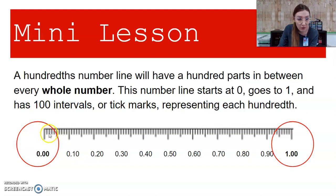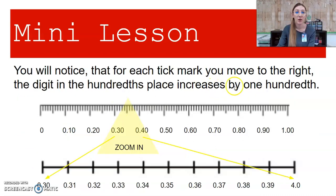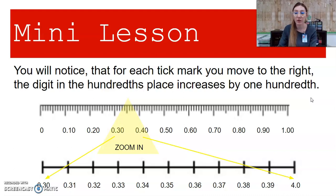One, two, three, four, five, six, seven, eight, nine, ten hundredths. You'll notice that for each tick mark you move to the right, the digit in the hundredths place increases by one-hundredth. So I want to go ahead and zoom in to our hundredths number line so you can see what's going on. I'm going to zoom in between thirty-hundredths and forty-hundredths.